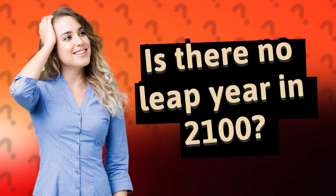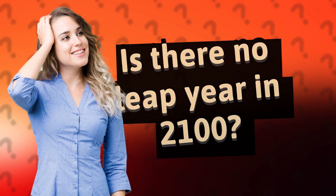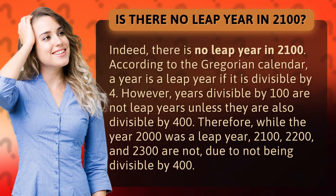Is there no leap year in 2100? Indeed, there is no leap year in 2100. According to the Gregorian calendar, a year is a leap year if it is divisible by 4. However, years divisible by 100 are not leap years unless they are also divisible by 400.